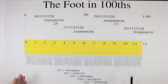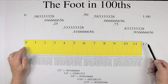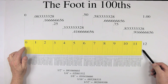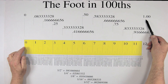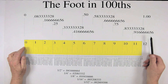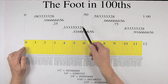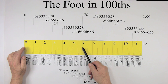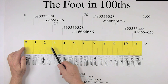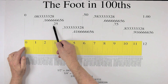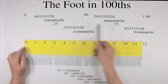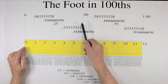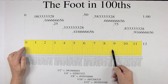So here we have the foot. Converting it into hundredths: one foot is 1.00. Divide that in two — we have six inches at 0.50. Divide six inches by two — we have three inches at 0.25. And if we add 0.25 and 0.50, we have nine inches at 0.75. Are you with me so far?